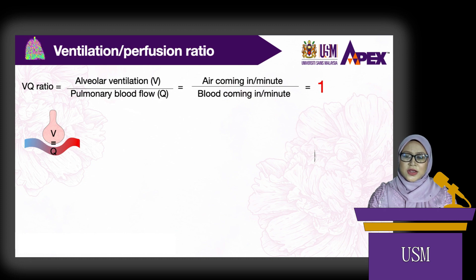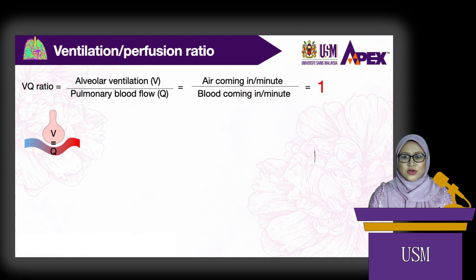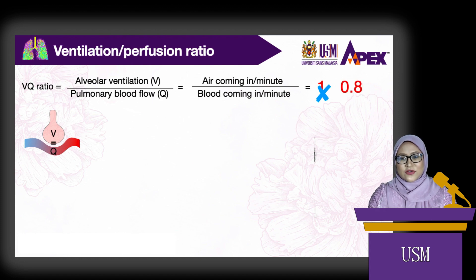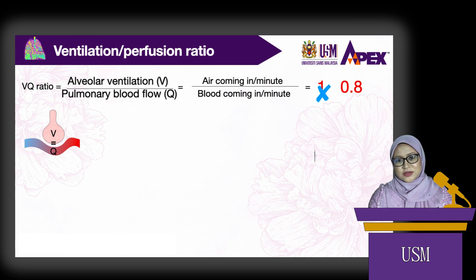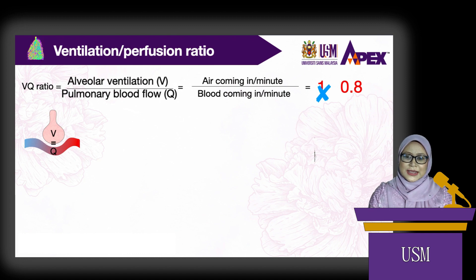However, normally, during normal tidal volume, normal cardiac output and breathing frequency, the lung has a VQ ratio of 0.8. It means that alveolar ventilation is 80% of perfusion. There is more perfusion than ventilation. The value of 0.8 is the average VQ for the entire lung.